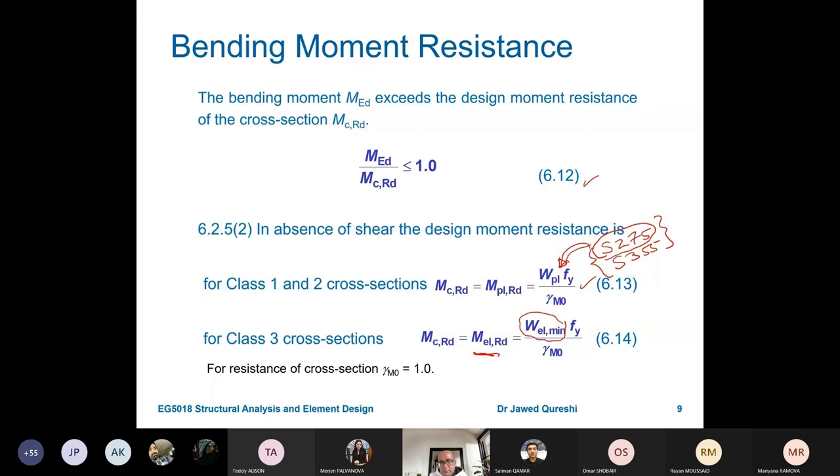W is section modulus. In this case, it is elastic section modulus. Where do we get this information? Again, go to steel4life blue book and then get this information from there.